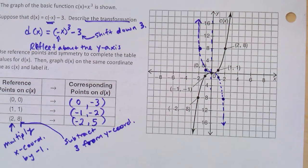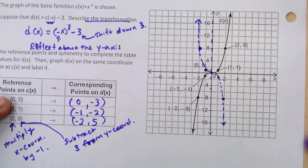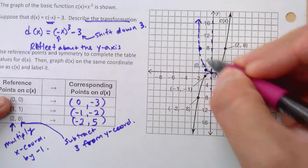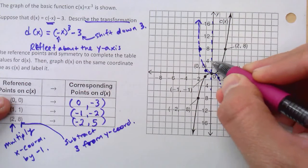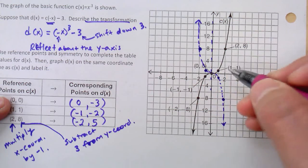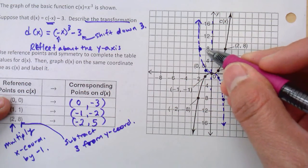What you want to do next is you want to shift it down 3. So all these points that you did have here, you've got to shift it down 3. Watch out. Our axes are actually going up by 2, 4, 6, 8.